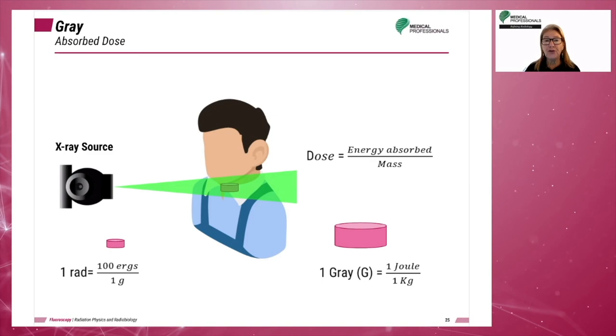The milligray is more often used, and occasionally the centigray. Millie is one one-thousandth of a gray and centi is one one-hundredth. To find milligray, we multiply 1,000 times gray. For example, 0.0001 gray times 1,000 equals 1 milligray.